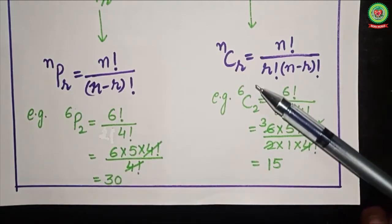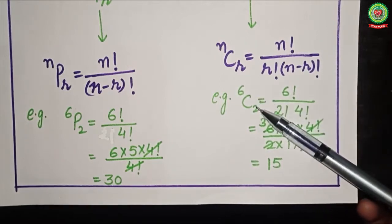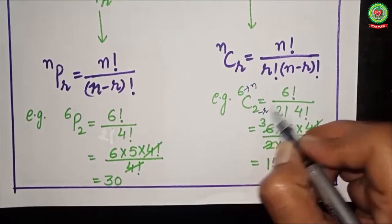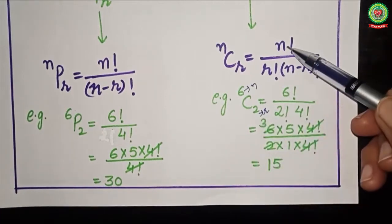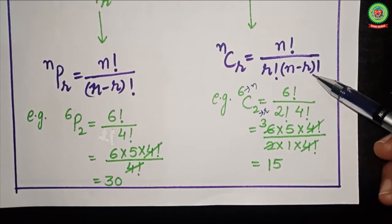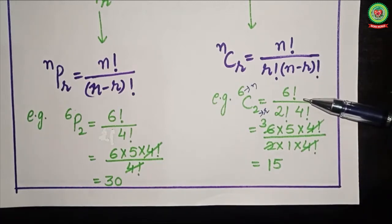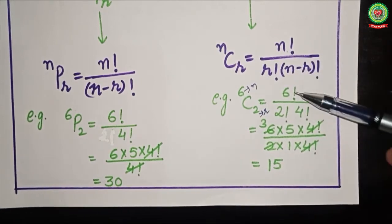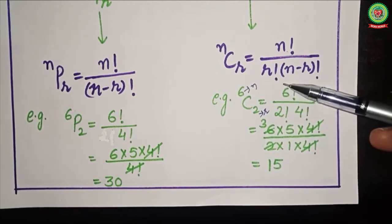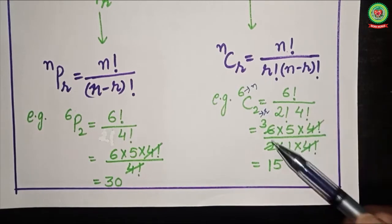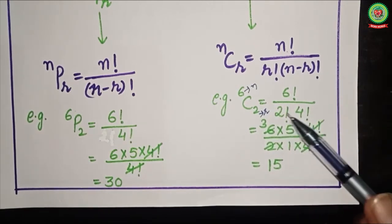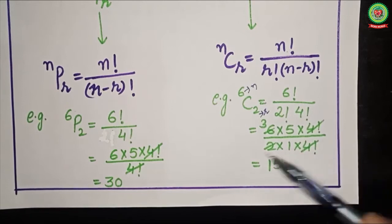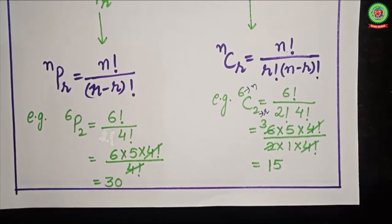Similarly for combination, take the example 6C2. Here n = 6 and r = 2. Applying the formula: 6C2 = 6! / (2! × 4!). Expand 6! as 6 × 5 × 4!, and write 2! as 2 × 1. The 4! cancels out, leaving (6 × 5) / (2 × 1) = 30 / 2 = 15.